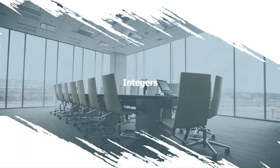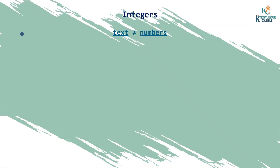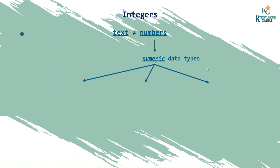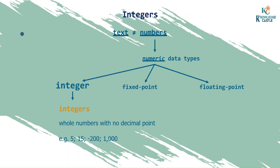The same thing applies to integers and numeric values, because different data types have different storage capabilities. For text, we already know: string, character, varchar, and enum. For numbers or numeric data types, there are three major types: integer, fixed point, and floating point. Integer, written as int, represents whole numbers with no decimal point.